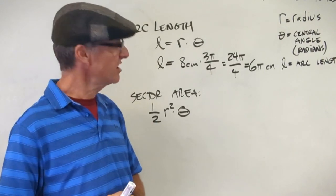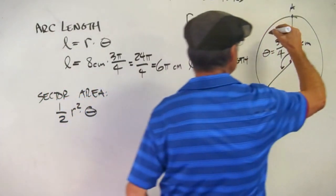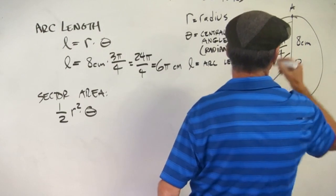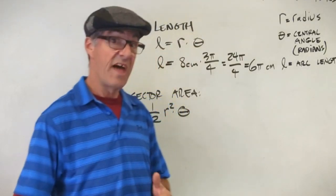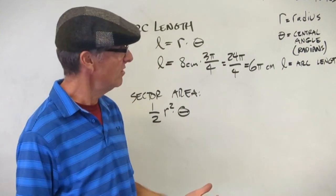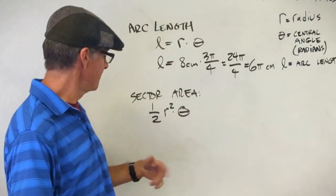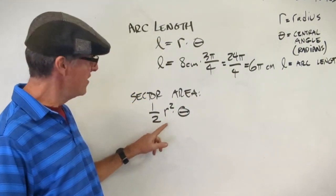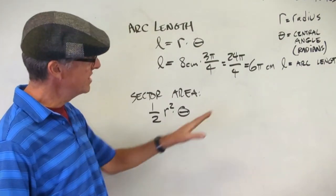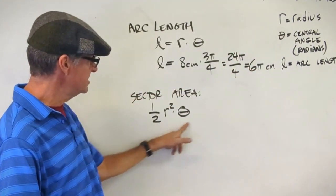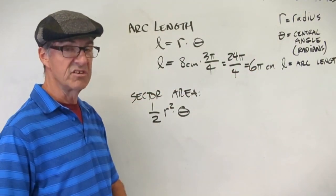Now let's take a look at sector area. That would be the area of this sector. I can shade it just so we know what we're talking about. It's that area of that slice of the circle. Here's the formula for that: one-half r squared times theta in radians. So pause the video, plug in from our diagram to this formula, and calculate the sector area.